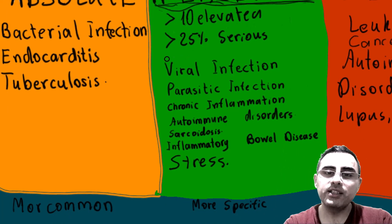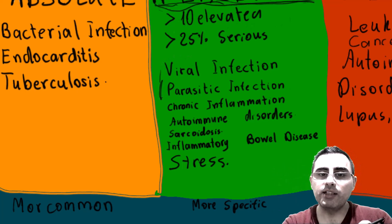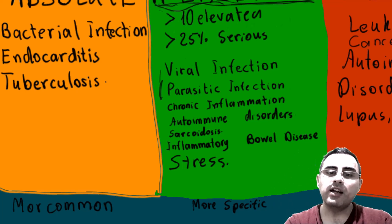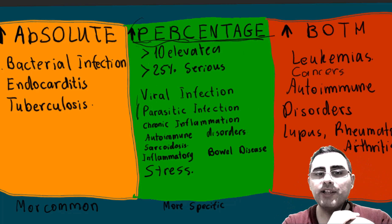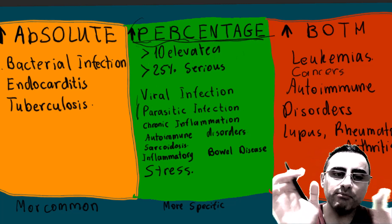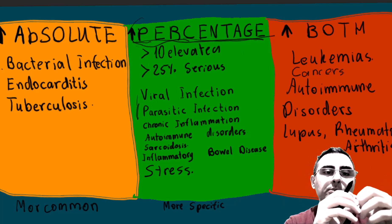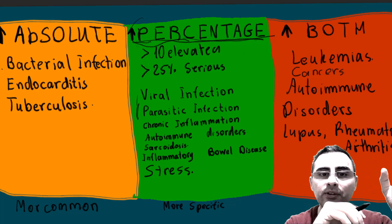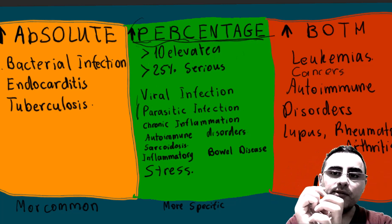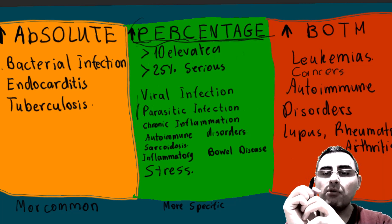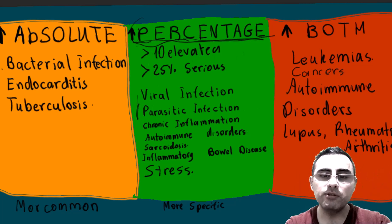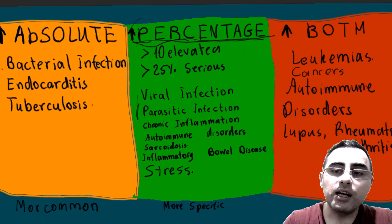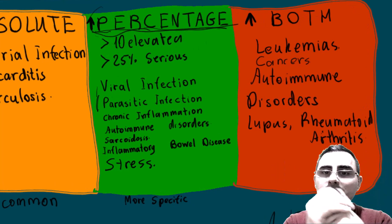In the case of parasitic infections, it is also more common for the percentage of monocytes to be elevated. Chronic inflammation and autoimmune disorders such as sarcoidosis, inflammatory bowel syndrome, or even stress can also cause elevation of the monocyte percentage. To summarize simply: absolute elevation is more common and more serious, while percentage elevation indicates more specific disorders like parasitic infections, viral infections, autoimmune disease, or stress.